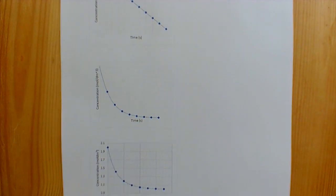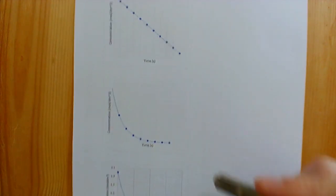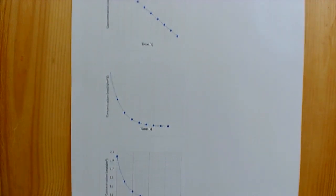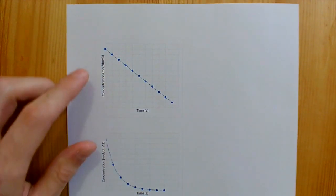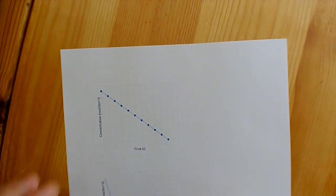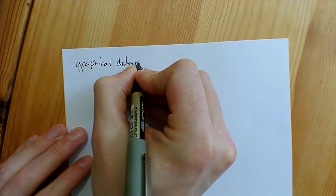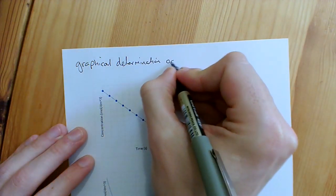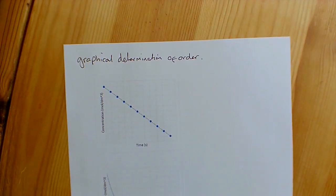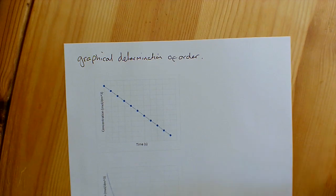Here we have three different graphs all showing change in concentration over time. You can tell they are all reactants because the concentrations are all decreasing. We'll start with the graphical determination of order. It's important to know that the gradient of the line on a concentration-time graph represents the rate.